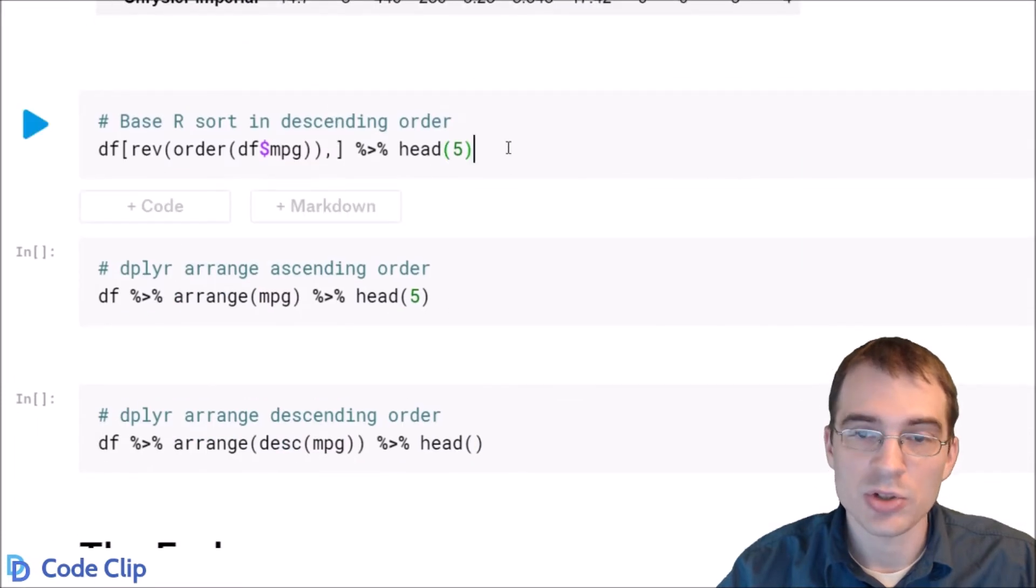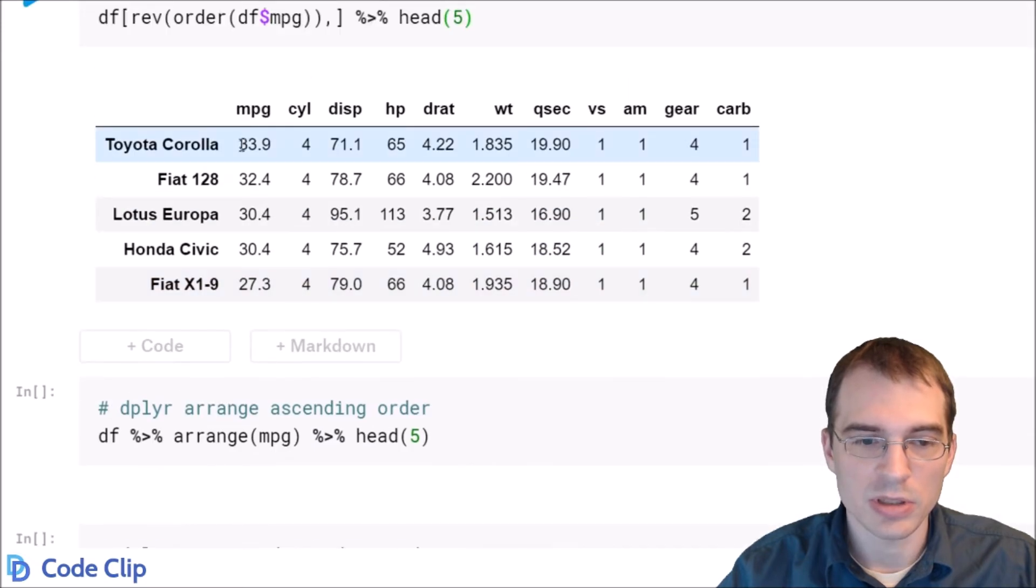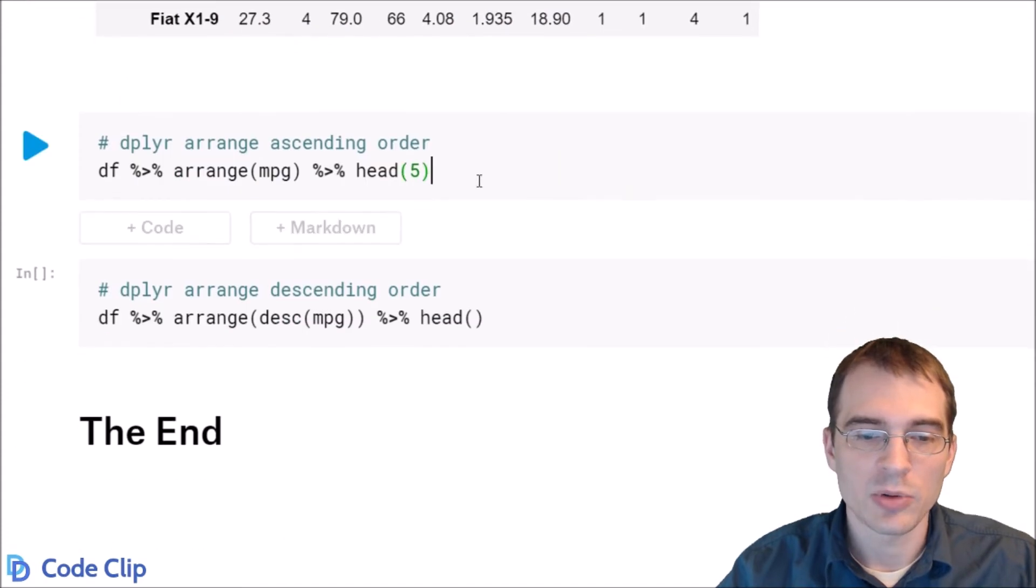If you want to sort in descending order, you just take the ordered column and pass it to the rev function, which reverses it, and then you get descending order. So here we see the biggest mpg's are first, and then go down from there.